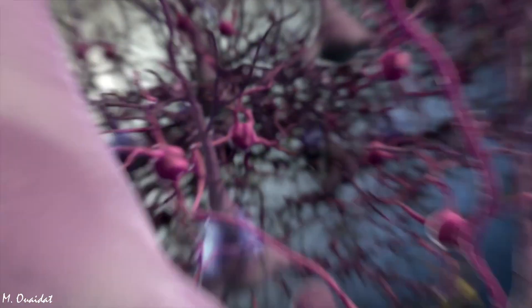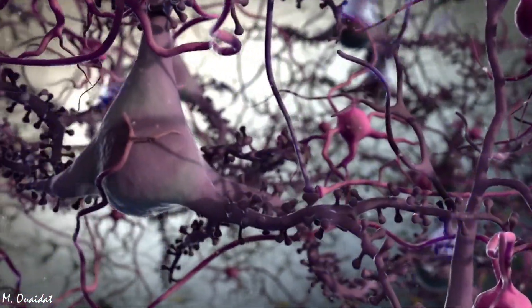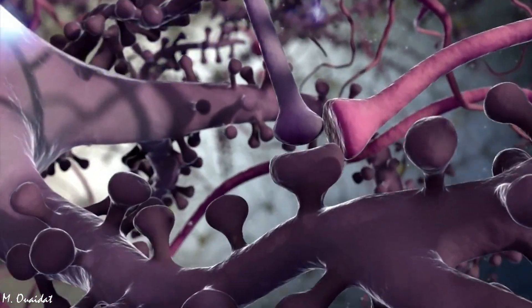A synapse is a functional junction between a neuron and another cell, which can also be a neuron or another cell such as a muscle or gland cell.